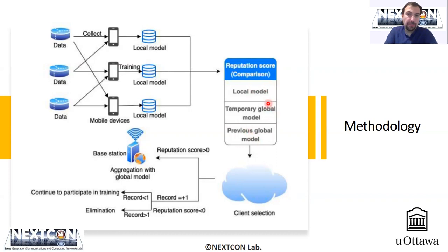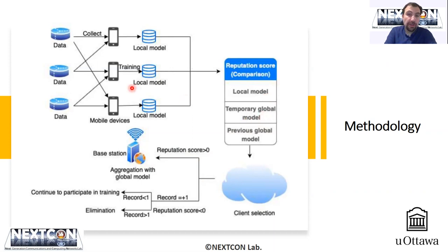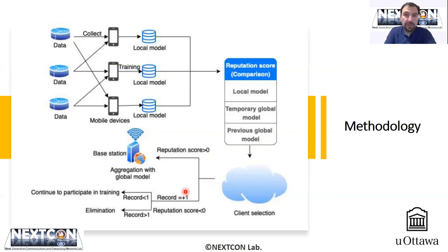There is a three-step comparison in the reputation score calculation, which I will talk about in a few seconds. In the client selection procedure, if the reputation score of a client is positive, that client has a ticket to be aggregated within the global model. If the reputation score of a participant is non-positive, that participant is not discarded right away, but is flagged until a certain number of consecutive negative reputations exceed a certain threshold.